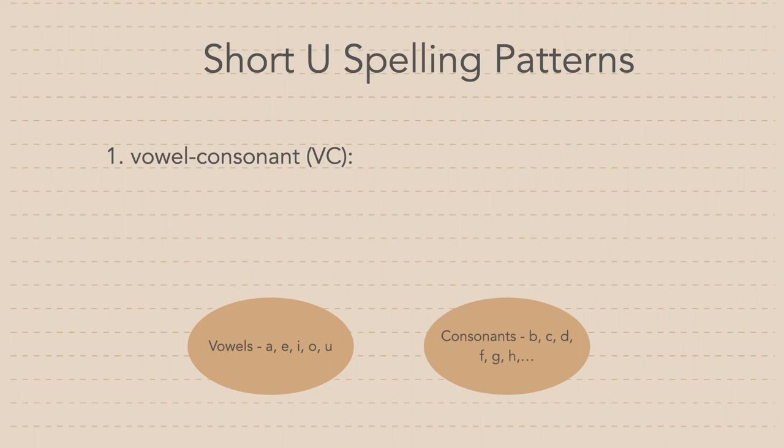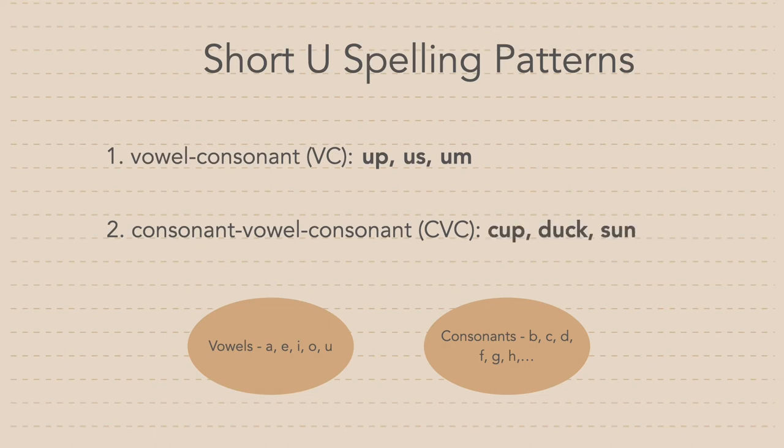Words with the V-C spelling pattern include up, us, and um. The second spelling pattern is consonant-vowel-consonant, C-V-C. Words with this pattern include cup, duck, and son.